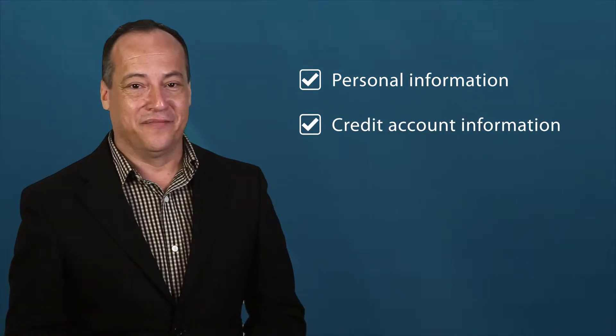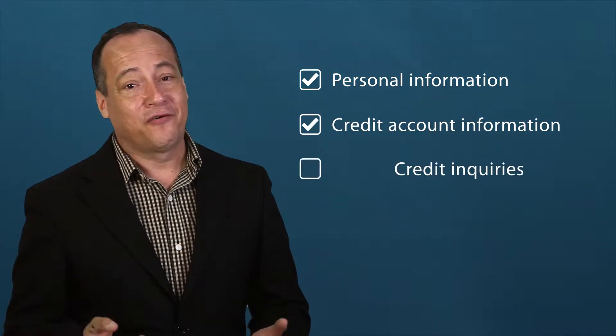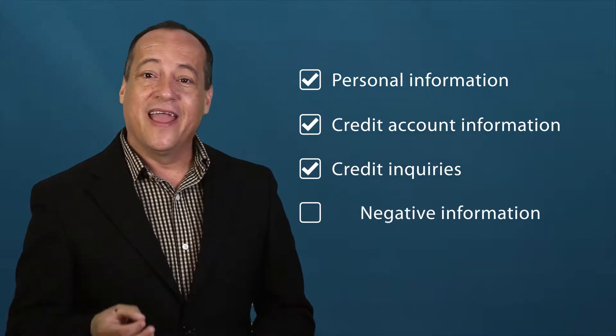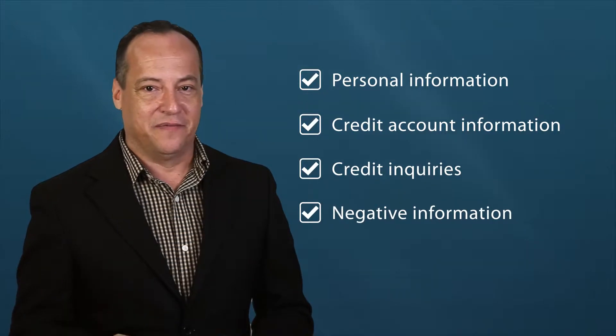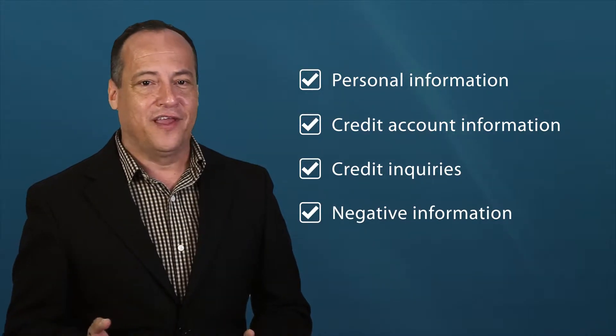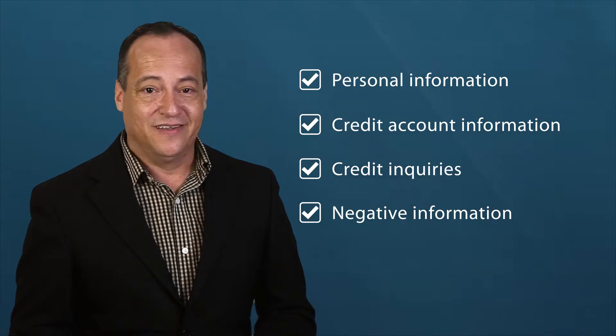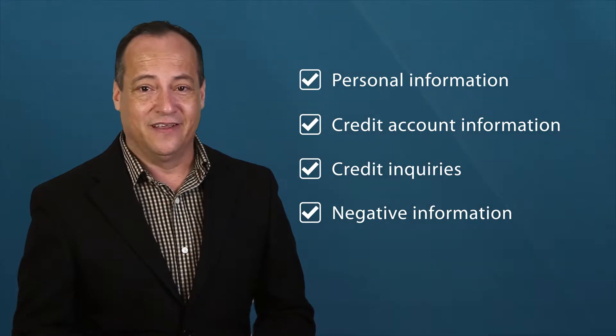So what can callers expect to see on their credit report? Let them know they can expect the following: personal information, credit account information, credit inquiries, and if applicable, any negative information. This includes anything in the public records such as bankruptcy, delinquency, judgments, or tax relief.